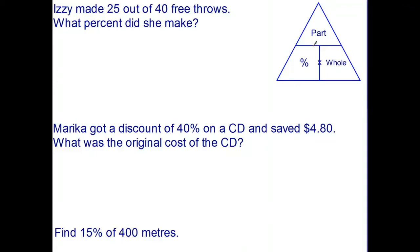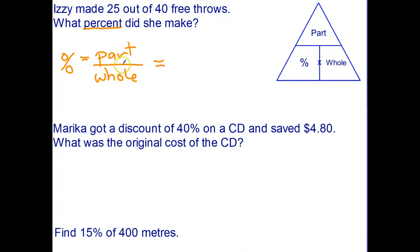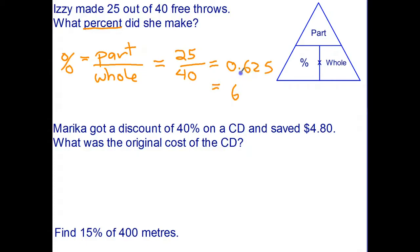Welcome back. In the first question we're trying to find the percent. The 25 is the part, and the 40 is the whole number of free throws. The formula is: percent equals part divided by whole, which is 25 over 40. Using a calculator that gives 0.625, and converting to a percent by moving the decimal point two places gives 62.5 percent.